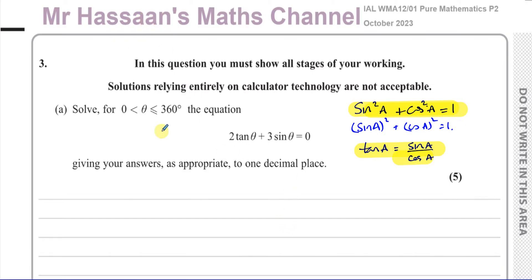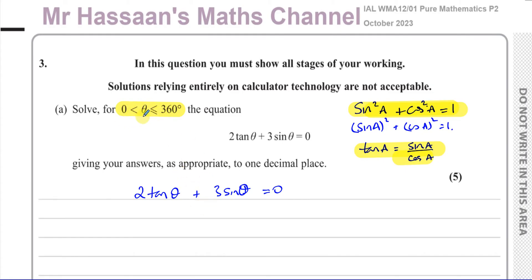We start with 2 tan(theta) plus 3 sin(theta) equals zero. We have to find theta to one decimal place within our limits zero to 360 — zero is not included, 360 is included. Using our second identity, we replace tan(theta) with sin(theta)/cos(theta), giving us 2 times sin(theta)/cos(theta) plus 3 sin(theta) equals zero.